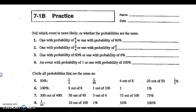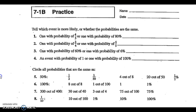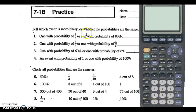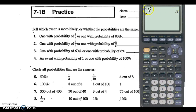Take a look at this practice — it tells us which event is more likely or which probabilities are the same. In order to compare these, the easiest way is by converting everything into decimals. For example, 4 over 5 as a probability equals the decimal 0.8. A probability of 80% — since 80% means 80 divided by 100 — is also 0.8. These two probabilities are equal.